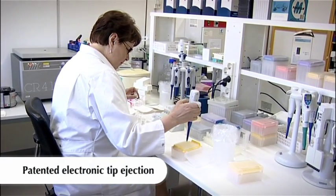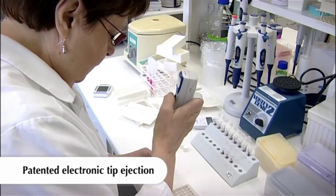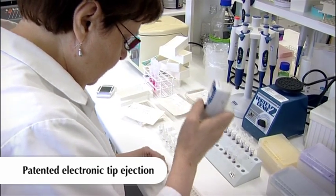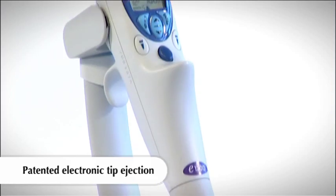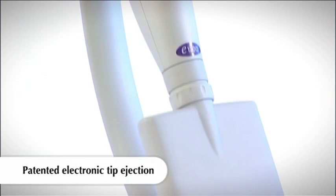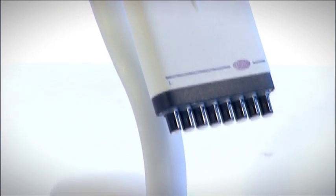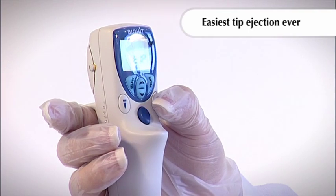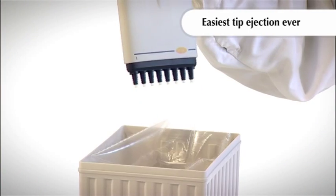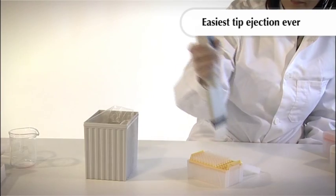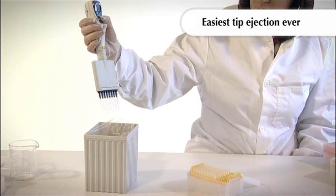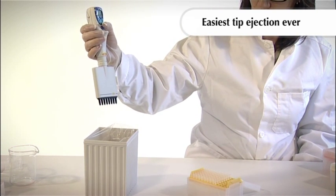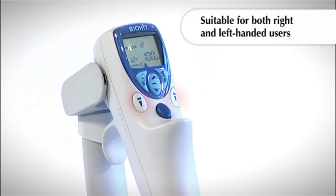Tip ejection can be laborious and, at worst, a contributing factor to strain injuries. E-Line is the only pipette on the market that provides fully electronic tip ejection. Just a feather-light touch is needed to eject the tips. Whether you have one or twelve tips to eject, the touch is the same. The tip ejection key is located on both sides of the keypad and, therefore, suits both left- and right-handed users.